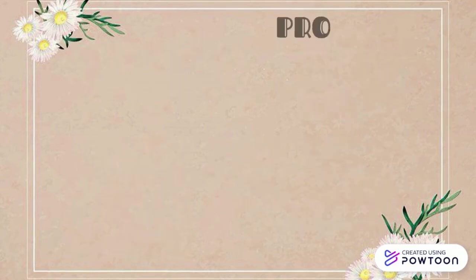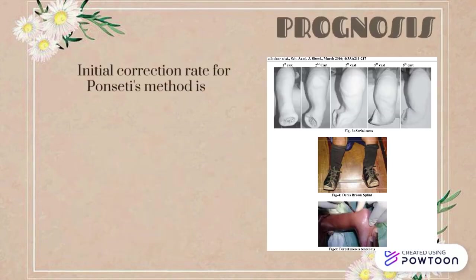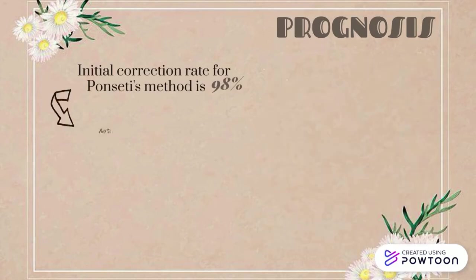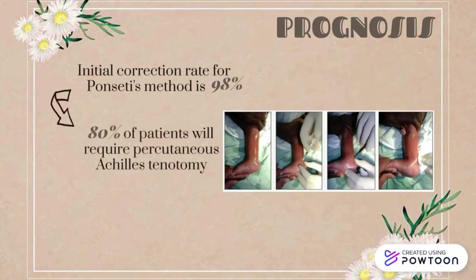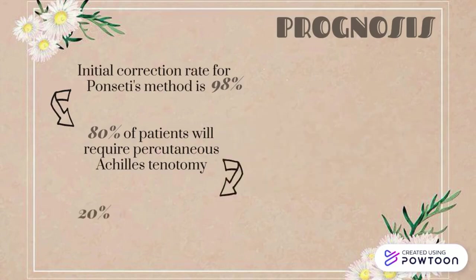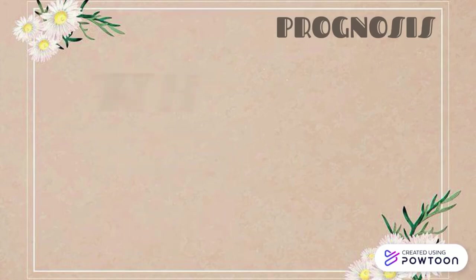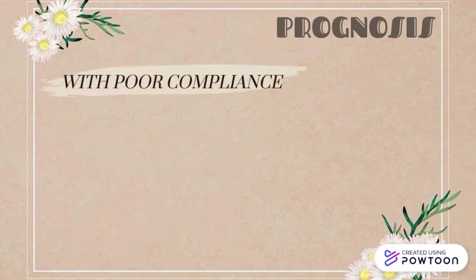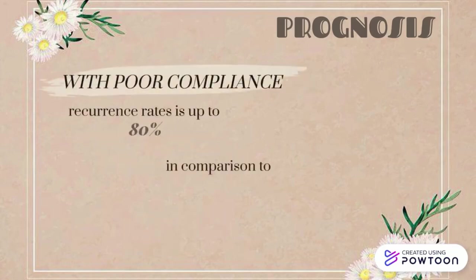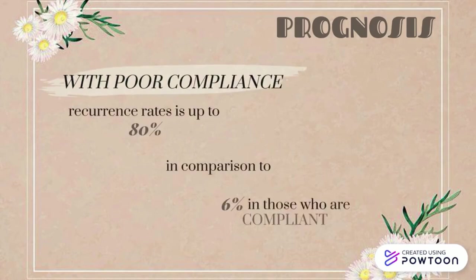For prognosis, the initial correction rate for the Ponseti method is 98%. About 80% of patients will require percutaneous Achilles tenotomy at the end of their casting, while another 20% of patients will require an anterior tibialis transfer. With poor compliance, the recurrence rate is up to 80%, in comparison to 6% in those who are compliant.